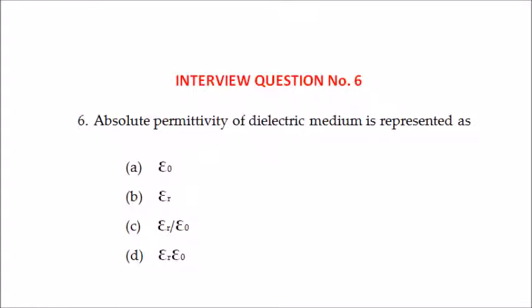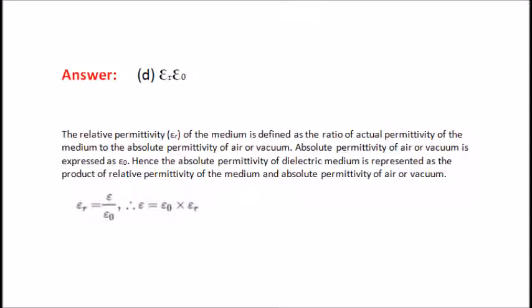Sixth question: absolute permittivity of a dielectric medium is represented as — epsilon-0, epsilon-r, epsilon-r divided by epsilon-0, or epsilon-r times epsilon-0? The answer is epsilon-r times epsilon-0. Because the relative permittivity of the medium is defined as the ratio of actual permittivity of the medium to the absolute permittivity of free vacuum, expressed as epsilon-0. Hence the absolute permittivity of the dielectric medium is the product of relative permittivity of the medium and absolute permittivity of free vacuum.